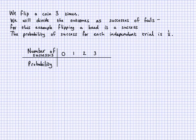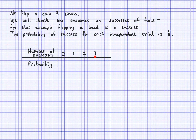The number of heads can be zero, one, two, or three. This table shows the distribution of probabilities for the number of successes, which is described by the binomial distribution with three trials and probability of success 1/2 for each independent trial.